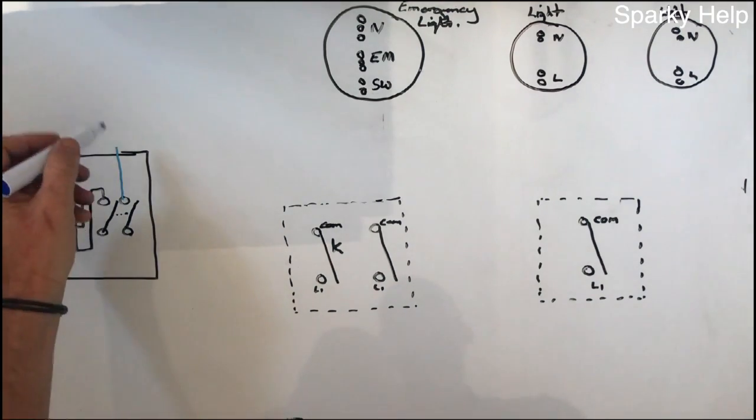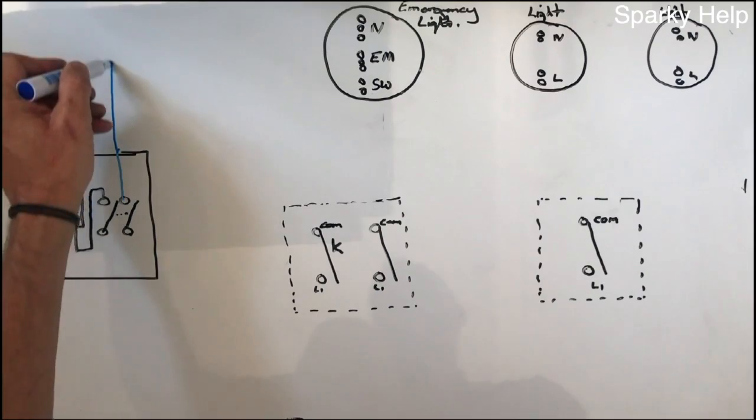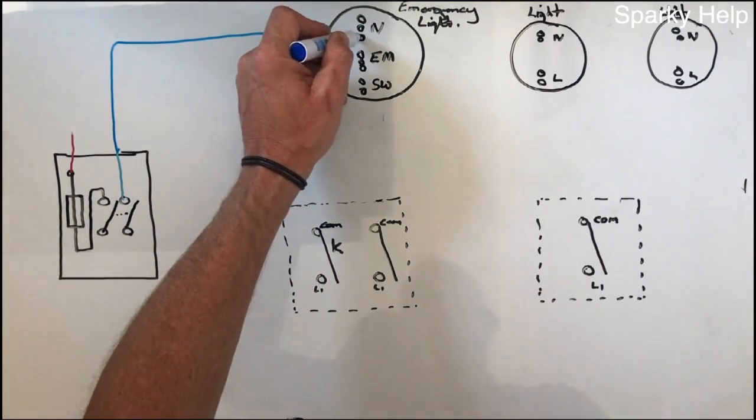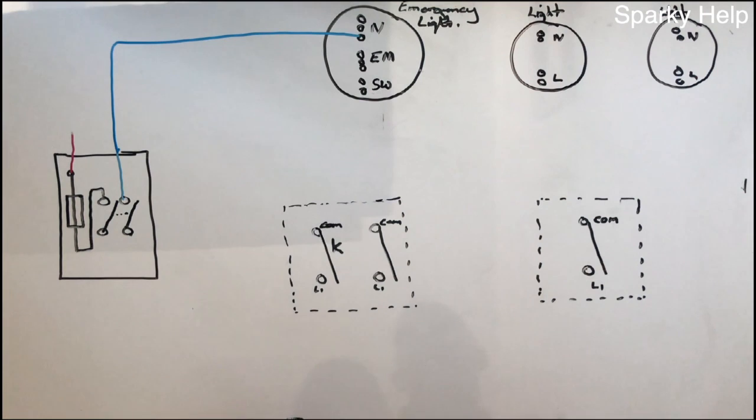Therefore neutral will go straight to the light for that first light there.